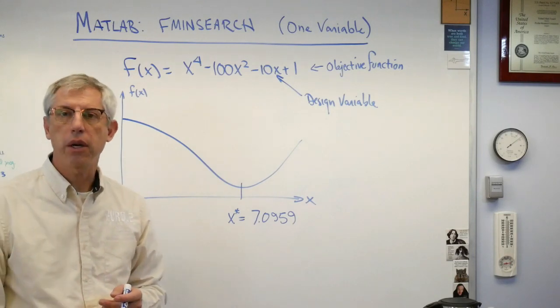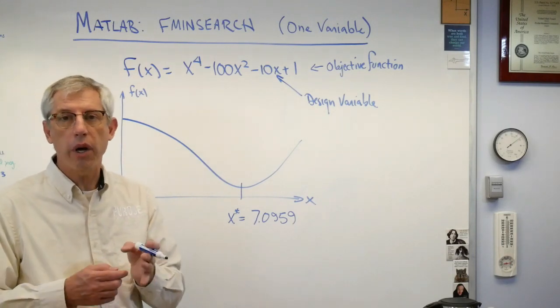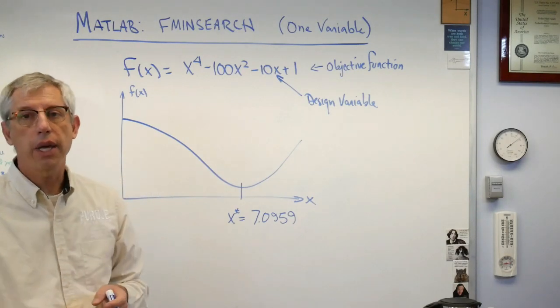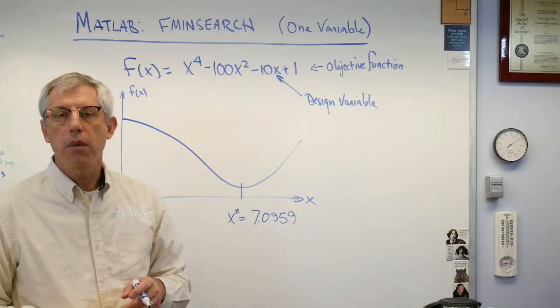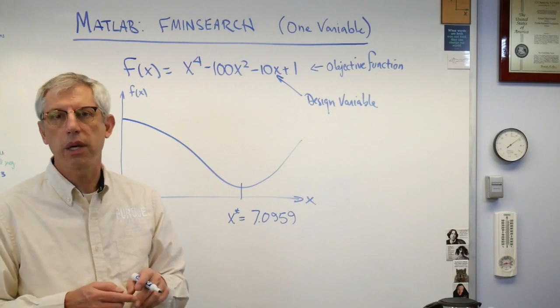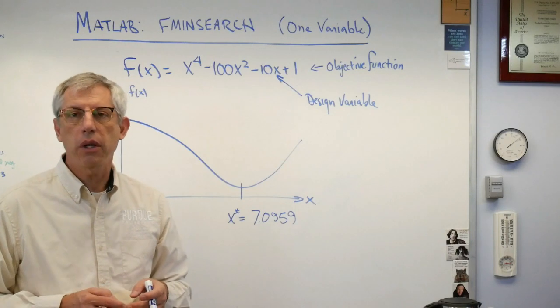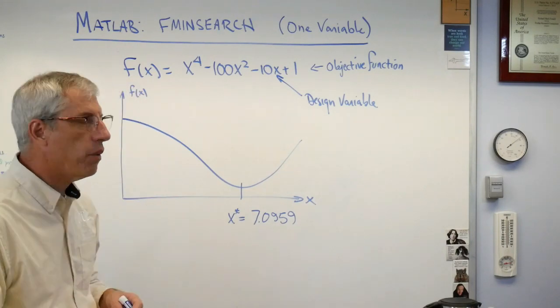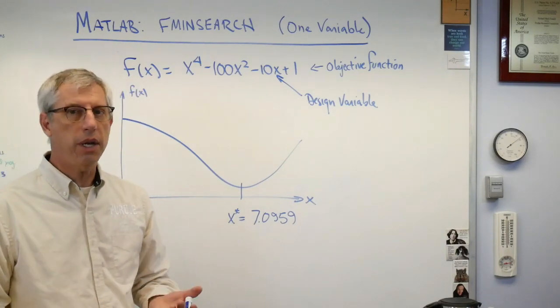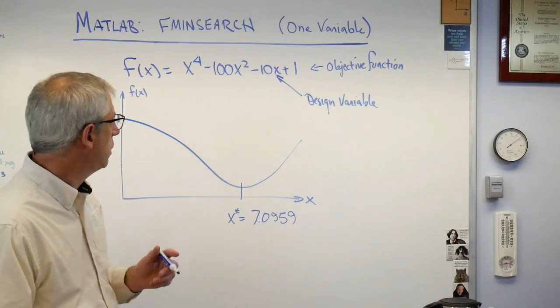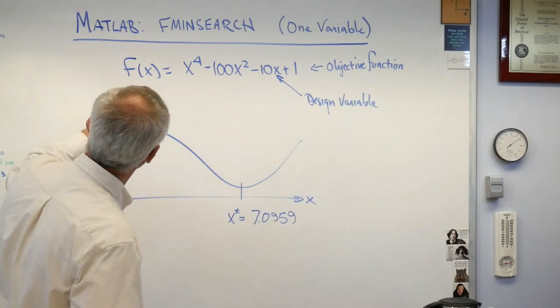That initial guess doesn't have to be very good, but as they search through design space, and most of the methods out there are search methods, they need to know where to start looking. Well, if you knew exactly where to start looking, you wouldn't have a problem. You wouldn't need to run fmin search.